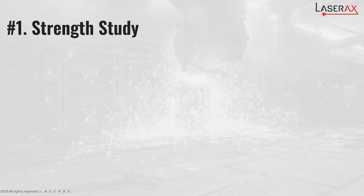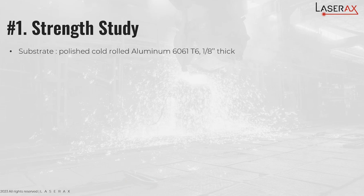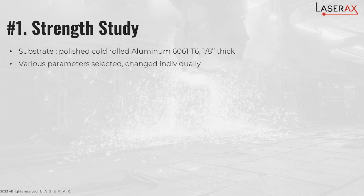We decided to divide this project into multiple phases, the first one being a strength study, in which we wanted to see if by doing laser texturing on the surface we could increase the overall strength of the bond. The substrate used for the entirety of the project was polished aluminum 6061, in order to have basically a negligible roughness as a reference. We used various parameters for the study and changed them individually to understand the effect of each one, selecting the prime parameters to arrive at optimal or prime recipes.